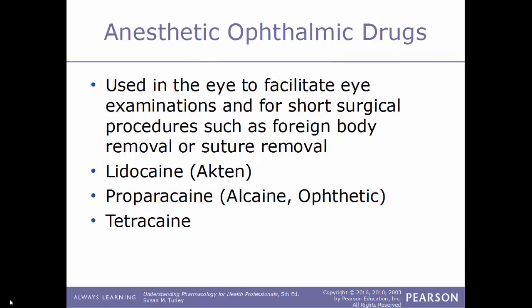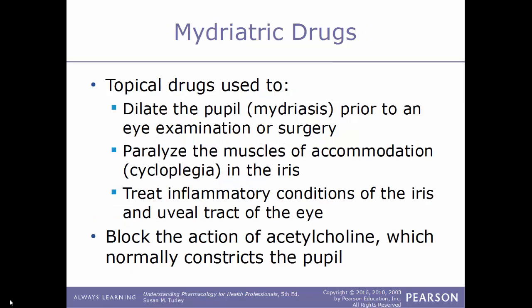Now we'll talk about anesthetic ophthalmic drugs. These are used in the eye to facilitate eye examinations and for short surgical procedures, such as suture removal or removing a foreign body from the eye. Examples include lidocaine, sold under the name Akten; proparacaine, also known as Alcaine or Ophthetic; and also tetracaine.